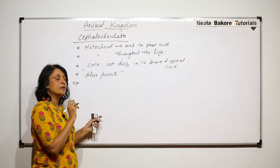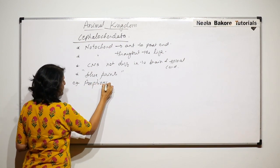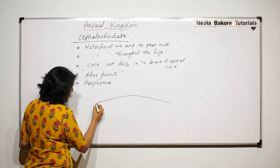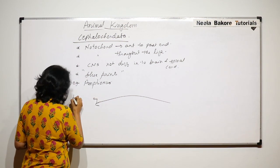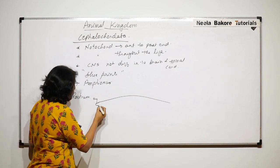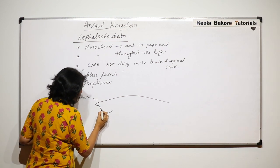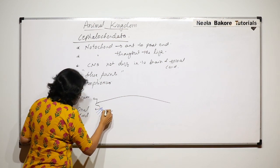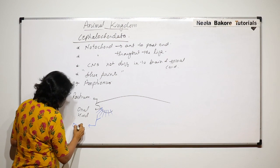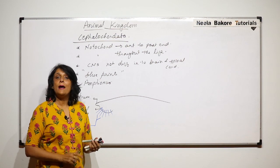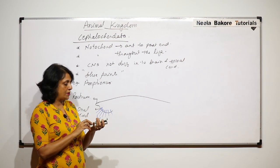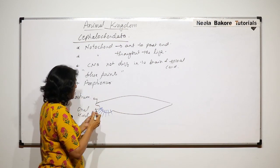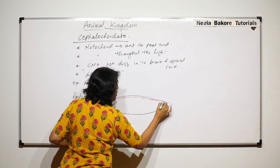The example we take in Cephalochordata is Amphioxus. Amphioxus has a fish-like, streamlined body. There is an anterior projection known as the rostrum. The mouth is on the ventral side and it is surrounded by a bulging part known as the oral hood. On this oral hood there are some sensory structures known as oral cirri.